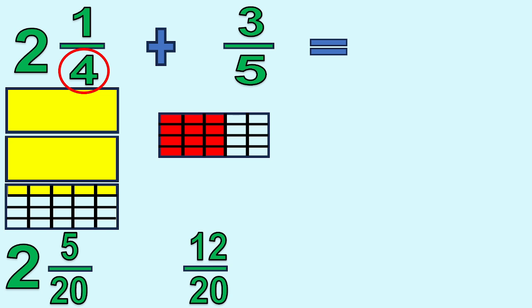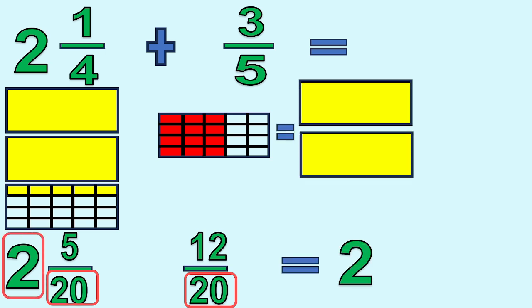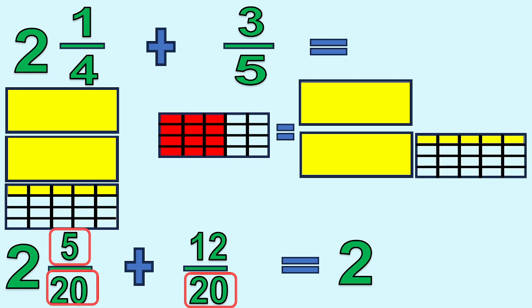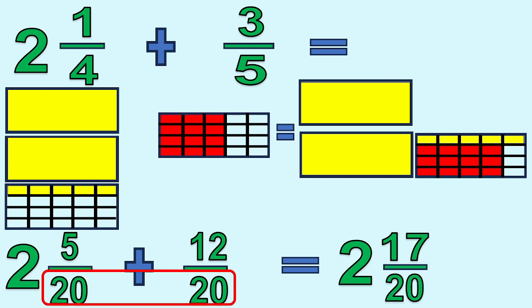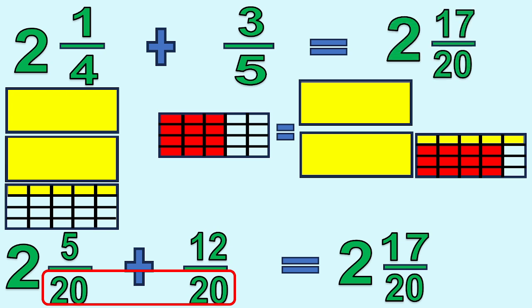Next, cut the second model again horizontally by 4 because the denominator of the first figure is 4. The figure is now cut into 20 parts, giving us 12 twentieths. We can add now because the denominators are already the same. We write the whole number 2, then add the numerators: 5 plus 12 equals 17. Copy the denominator 20. So the final answer is 2 and 17 twentieths.